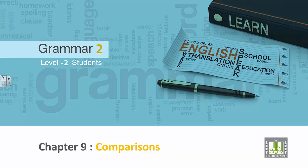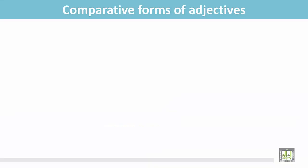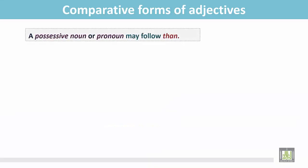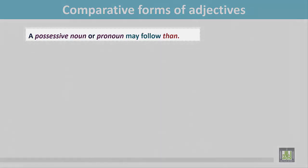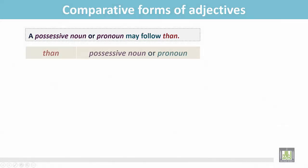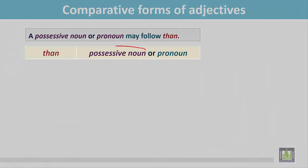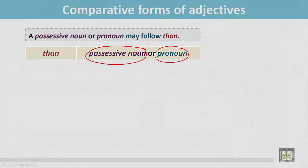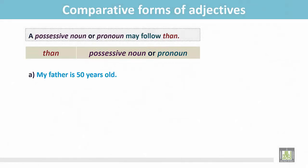Grammar 2 for level 2 students. Chapter 9: Comparisons. Comparative forms of adjectives. A possessive noun or pronoun may follow 'than'. See the structure: after 'than' we write a possessive noun or possessive pronoun. Examples: